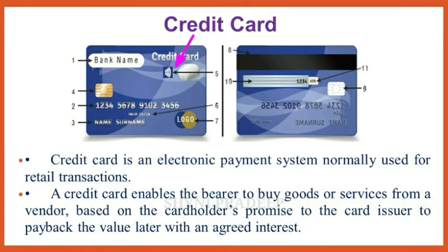The fifth feature is the RFID symbol — four curved lines radiating rightwards, similar to a tilted Wi-Fi symbol — indicating it is a contactless smart card. The sixth feature is the expiration month and year, visible on the front side. The card is valid until the last day of the month printed on it.